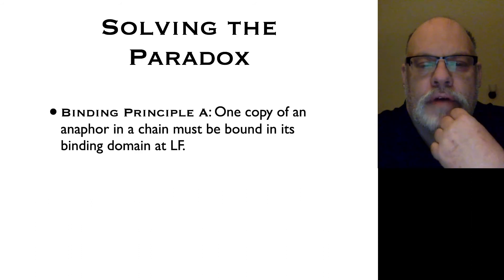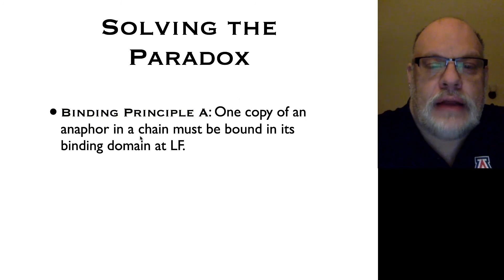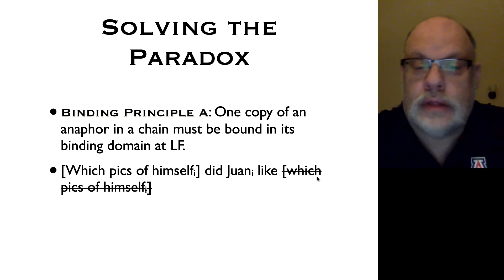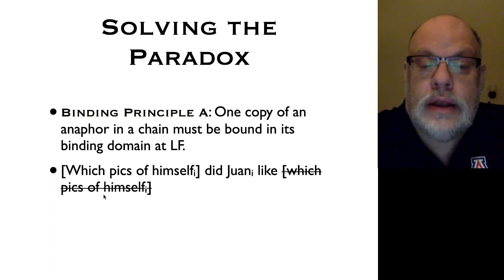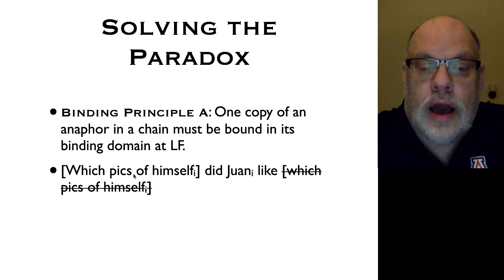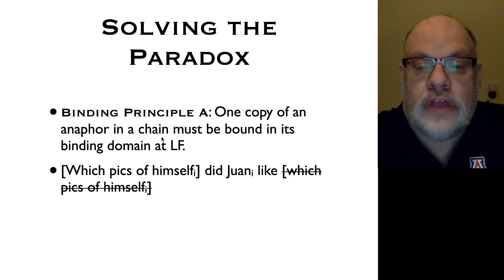We are able to explain the differences in binding domain by changing our definition of Principle A so that it makes reference to chains. Here's our revised Principle A: one copy of an anaphor in a chain must be bound in its binding domain at LF. So in a sentence like which pictures of himself did Juan like, silently which pictures of himself — there is one copy of the anaphor that meets Principle A because it is C-commanded by Juan and co-indexed with Juan. That copy meets the condition. The higher copy does not, but that doesn't matter because binding Principle A says one copy of an anaphor in a chain must be bound in its binding domain. The silent lower copy meets condition A.